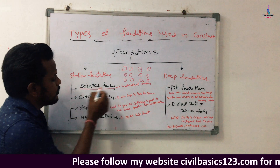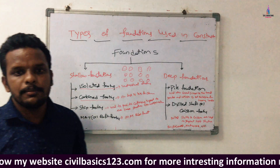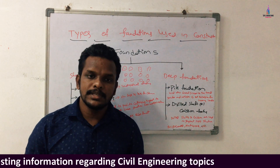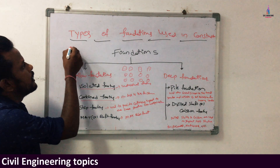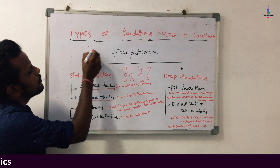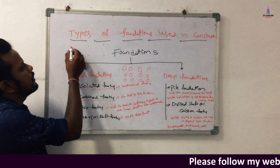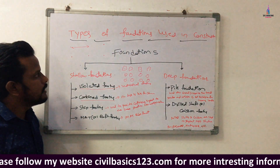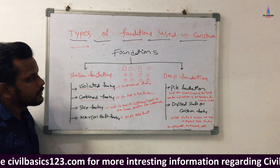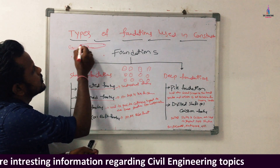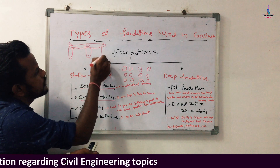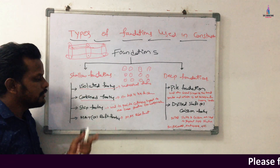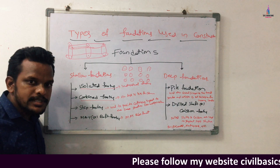The second type is combined footing. Combined footings are used in building constructions when the center-to-center distance between columns is less. For example, with six columns, if the center-to-center distance is less than 8 feet, we provide a combined footing for those column sections. This is the second type under shallow foundations.